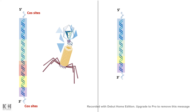Now, if the cos sites are 50 kb pairs away from each other, then the DNA can be efficiently packaged inside the phage head. But if the distance between two cos sites is less than 30 kb pairs, then no packaging takes place.